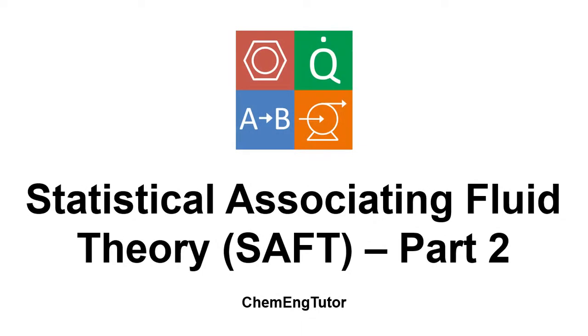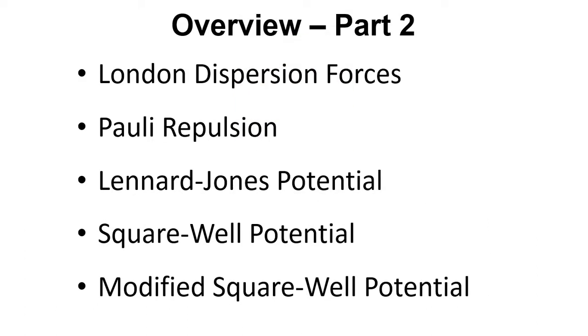In this video we're going to look at some more important concepts that we need to think about to try and understand statistical associating fluid theory. The concepts that we're going to look at are London dispersion forces, Pauli repulsion, and then some potential models that help us understand and think about the attraction and repulsion between the segments that are involved in SAFT theory.